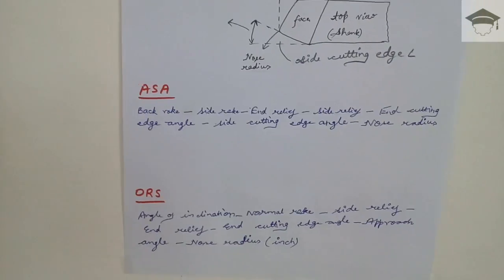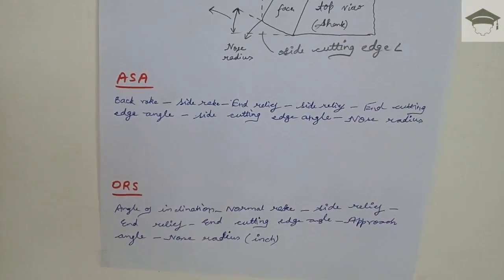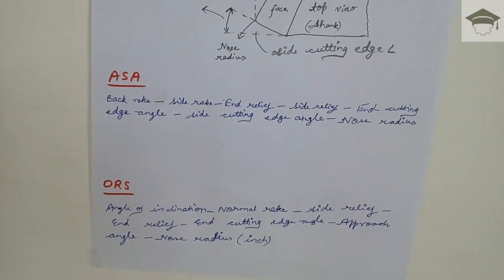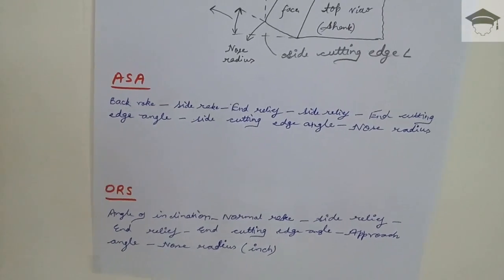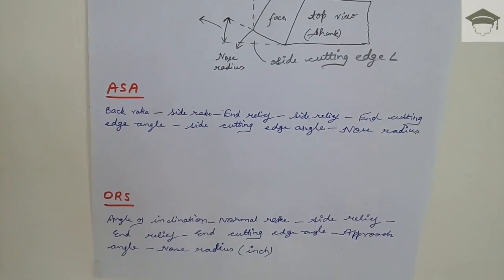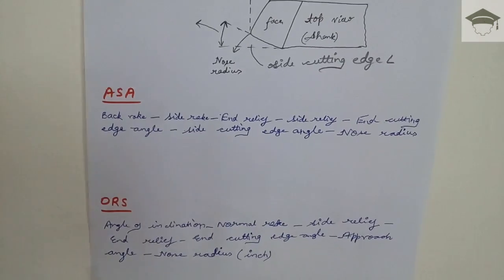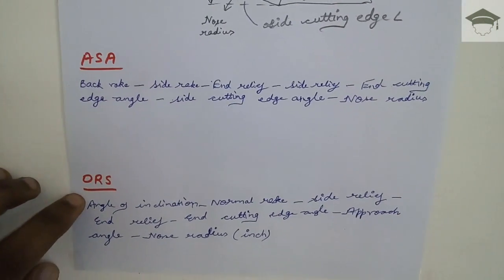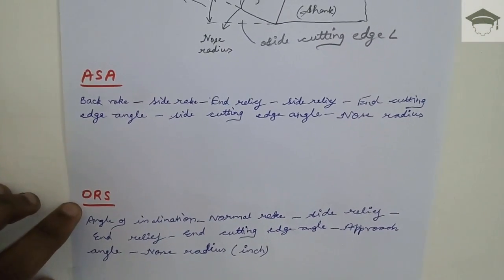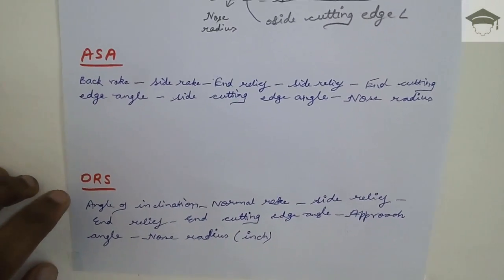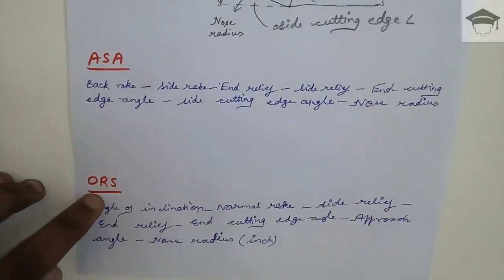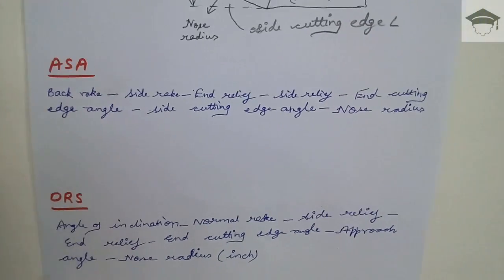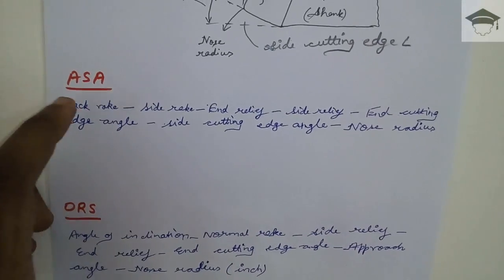There are two systems used for nomenclature. One is known as the ASA system, and the second one is ORS — the Orthogonal Rake System.